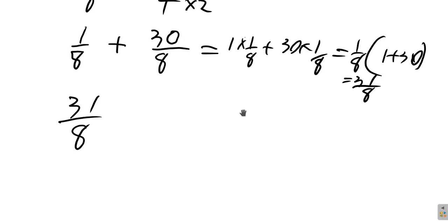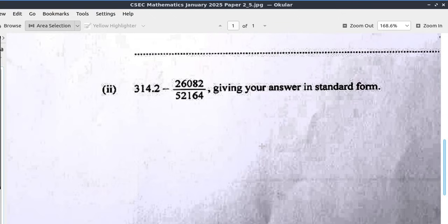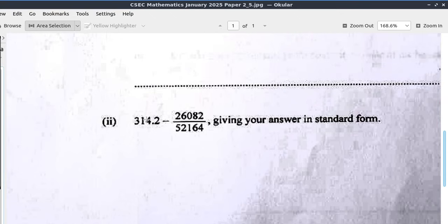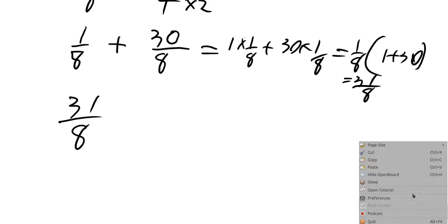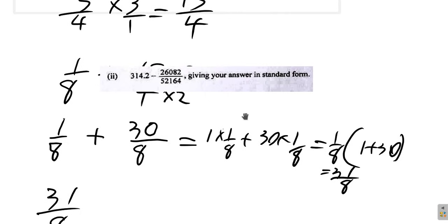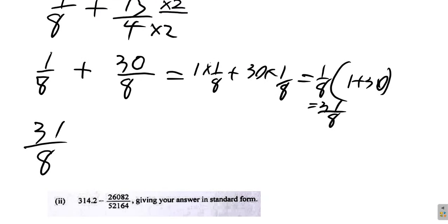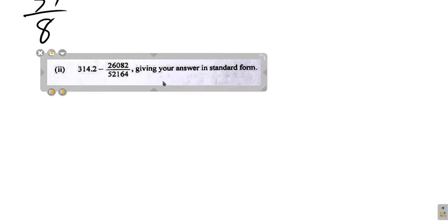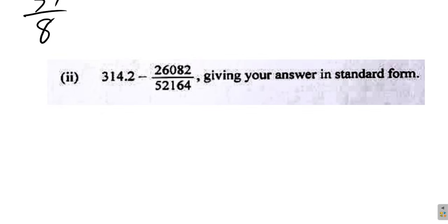Remember, I'm working it out in detail, step by step, and taking longer than you would expect to do in the exam. Now, this. 314.2 minus 26,082 over 52,164, giving your answer in standard form. Let me copy, paste it over here. Let's drag it down here and work it out.